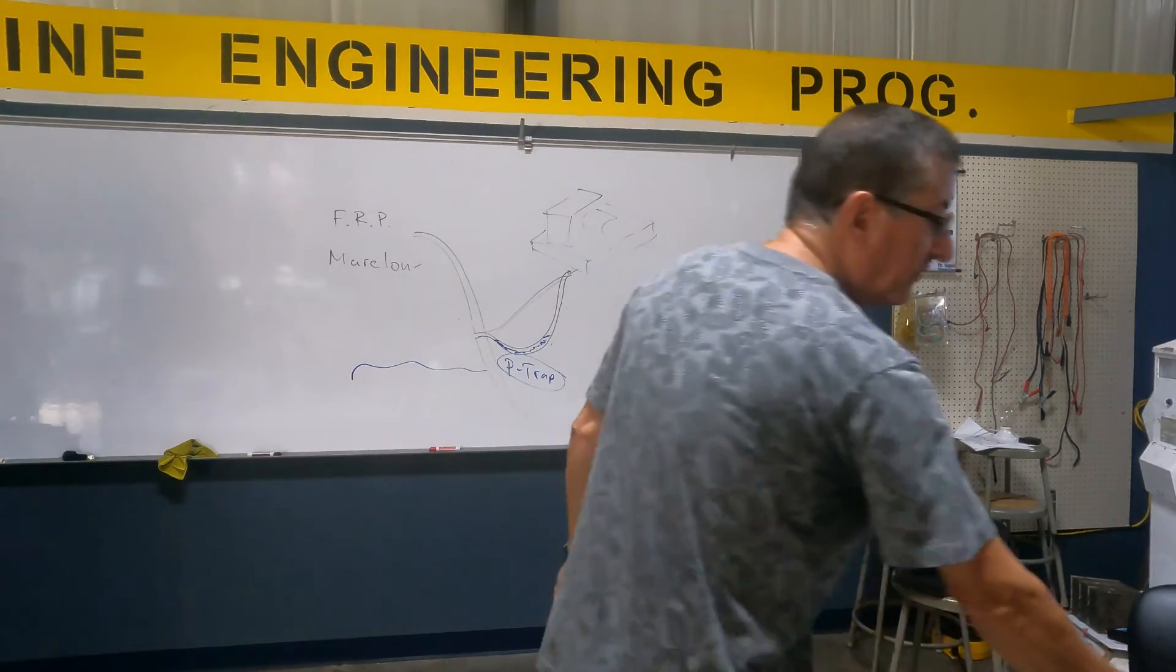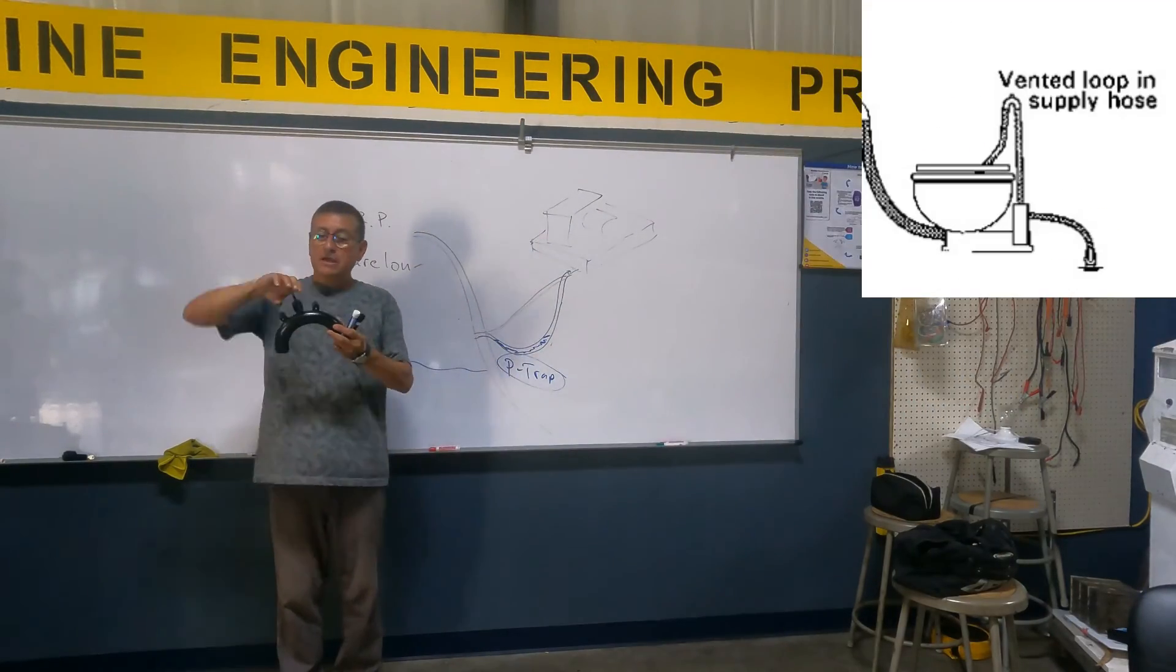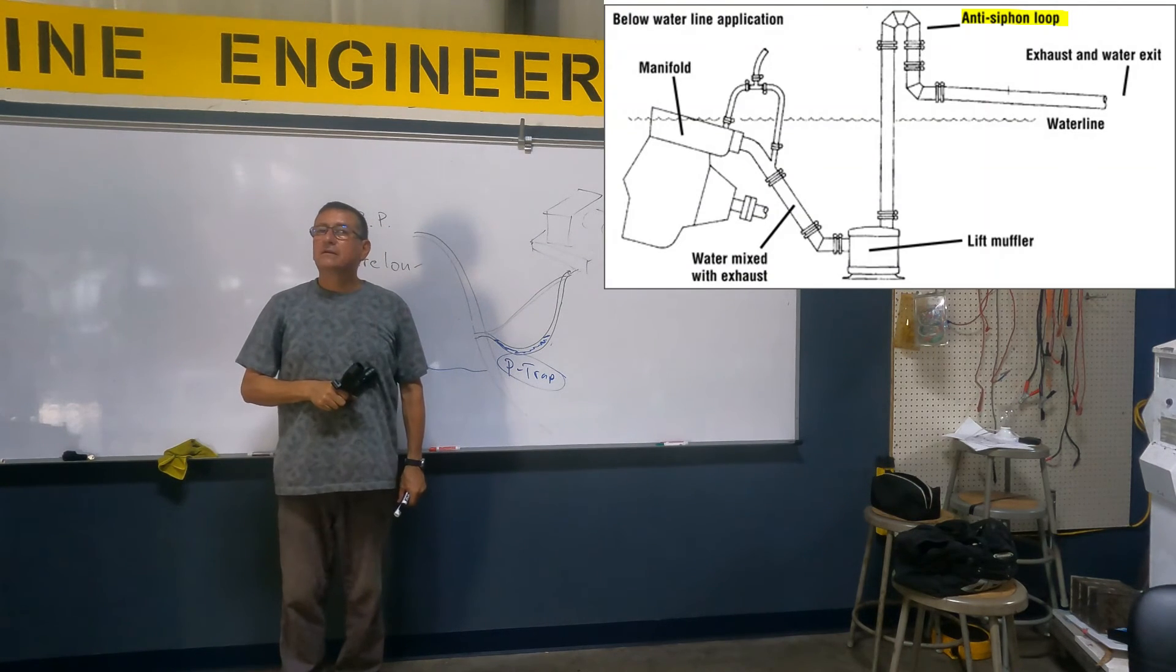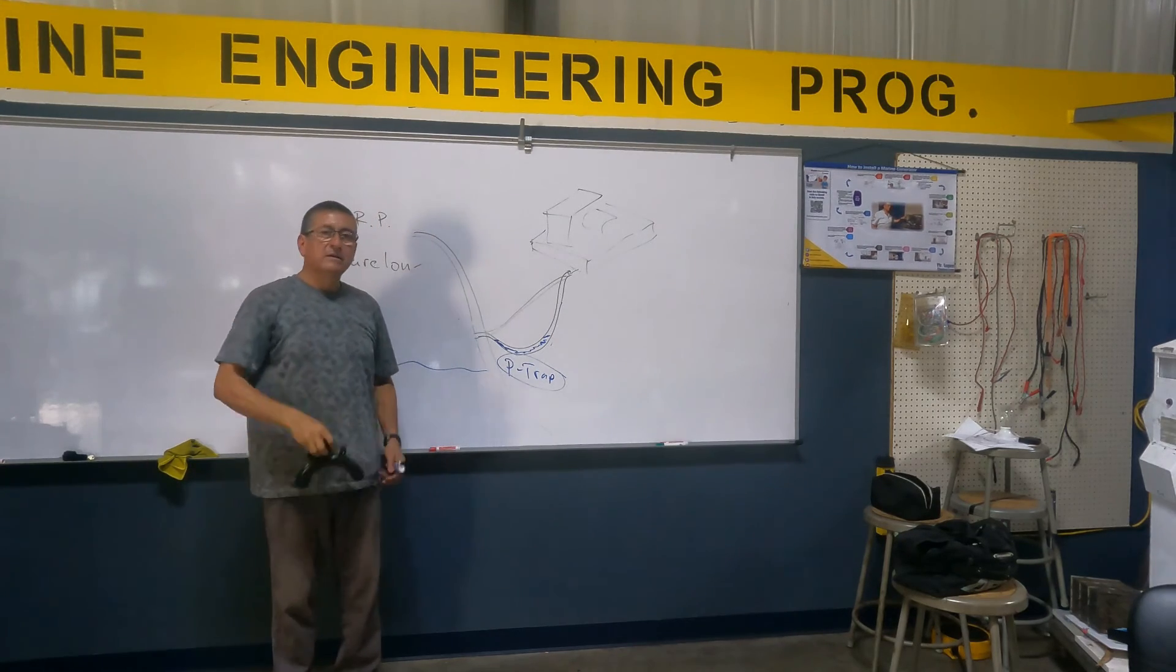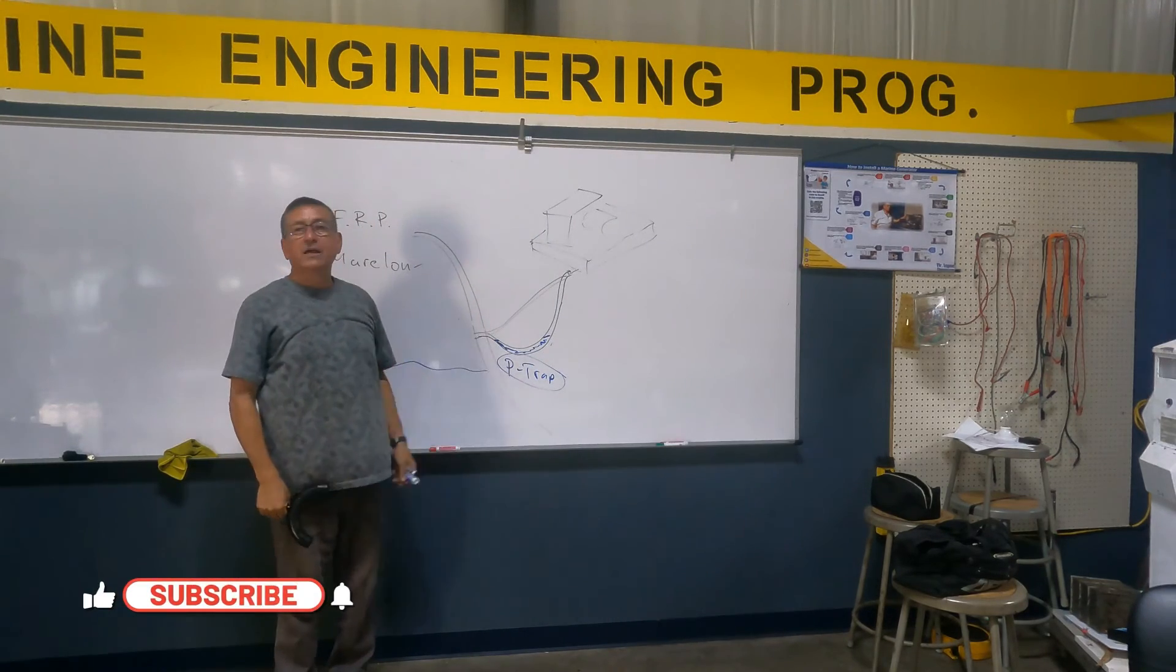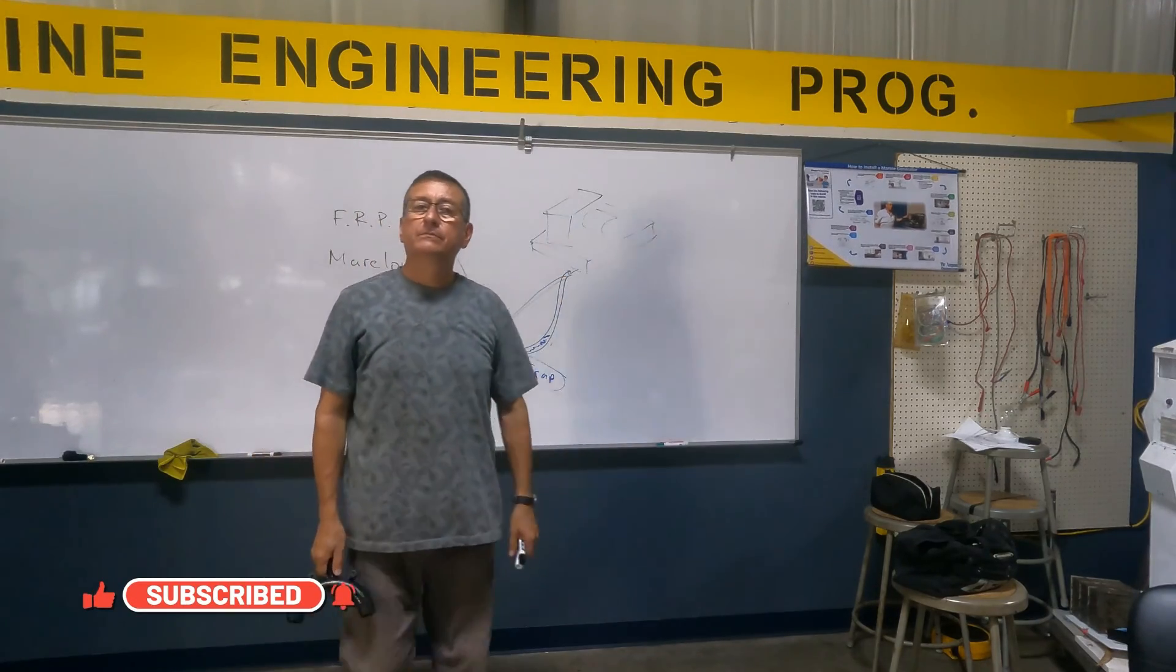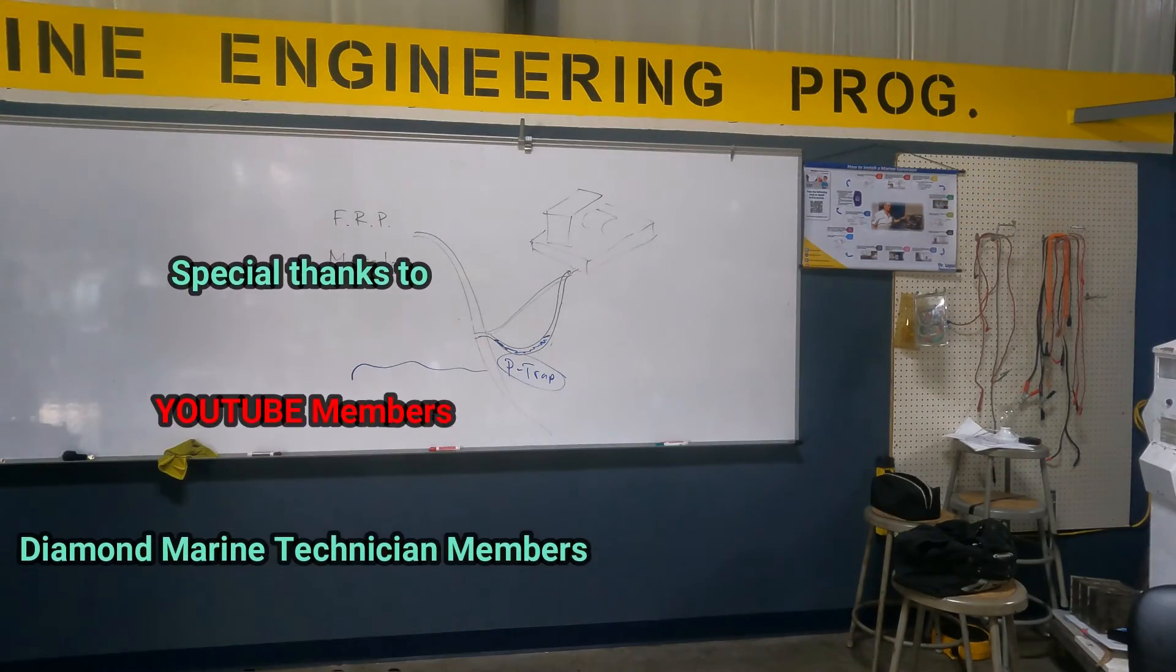Now explain the difference between a P-trap, vented loop, and anti-siphon device. The anti-siphon device only blocks the intrusion of siphoning water, and this one blocks the intrusion of gases into the cabin. That's the main difference between those three terms.